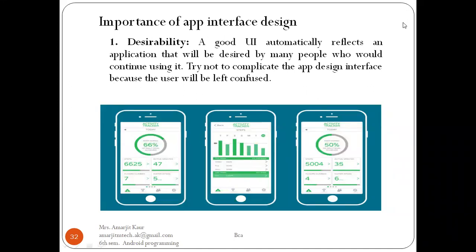Some key points on why it is crucial to develop a good interface and app design are as follows. First is desirability. A good UI automatically reflects an application that will be desired by many people who will continue using it. Try not to complicate the app design interface, because the user will be left confused. You need to make it easy, attractive and useful. For example, older people sometimes find it difficult to use mobile phones, so your goal as a developer should be to make it simple enough for everyone.